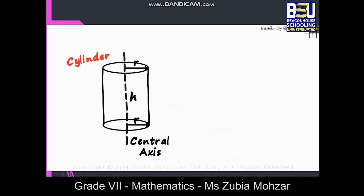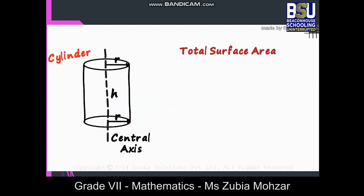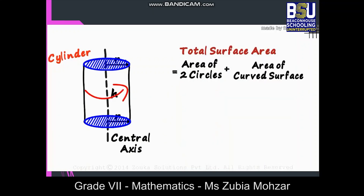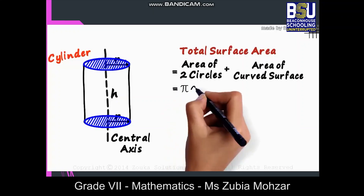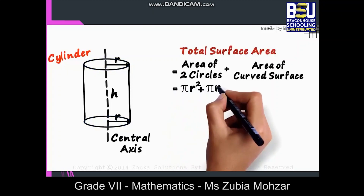So how do we find the total surface area of the cylinder? It will be the sum of the areas of the two circles and the area of the curved surface. As the radius is r, the area of each circle will be πr². So the sum of the areas of both circles will be πr² plus πr².